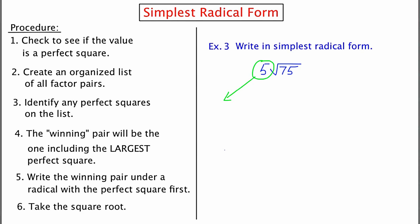Our next step would be to consider the number 75 and ask ourselves, is that a perfect square? And the answer is no, so we're going to have to go through the procedure that we've gone through in the last two examples, and that is to come up with an organized list of numbers that multiply to 75. They are 1 and 75, 3 and 25, 5 and 15, and that's it.